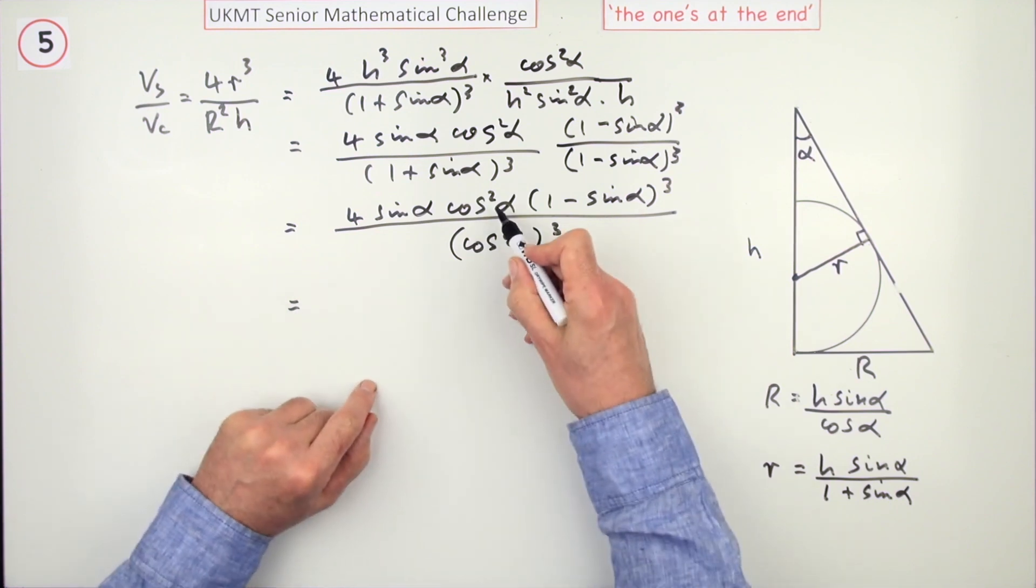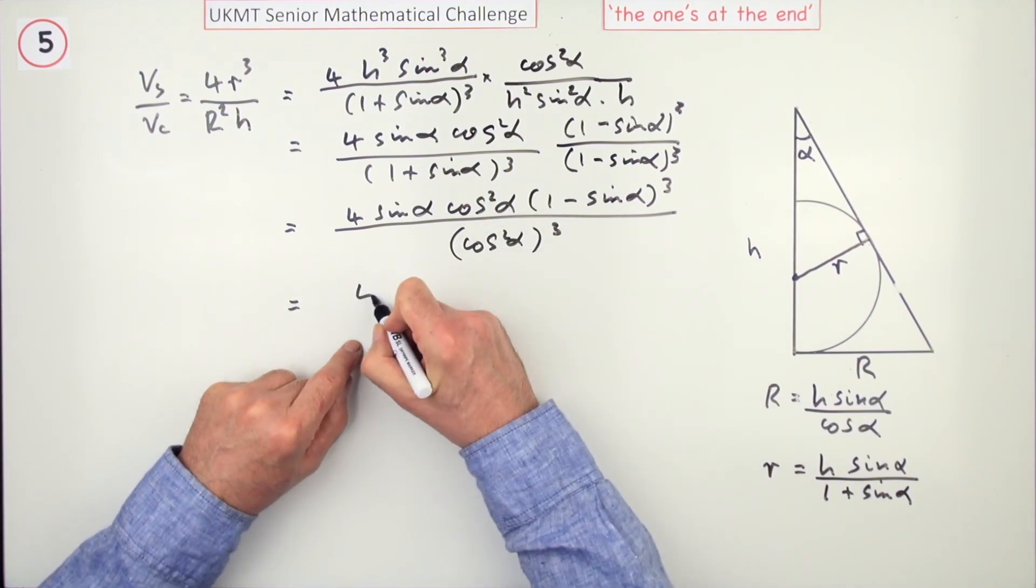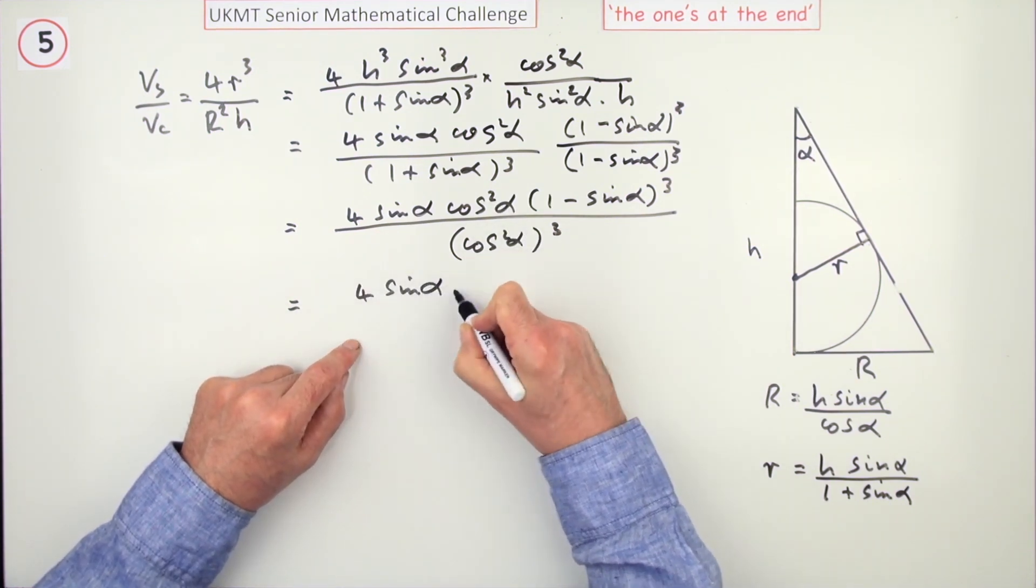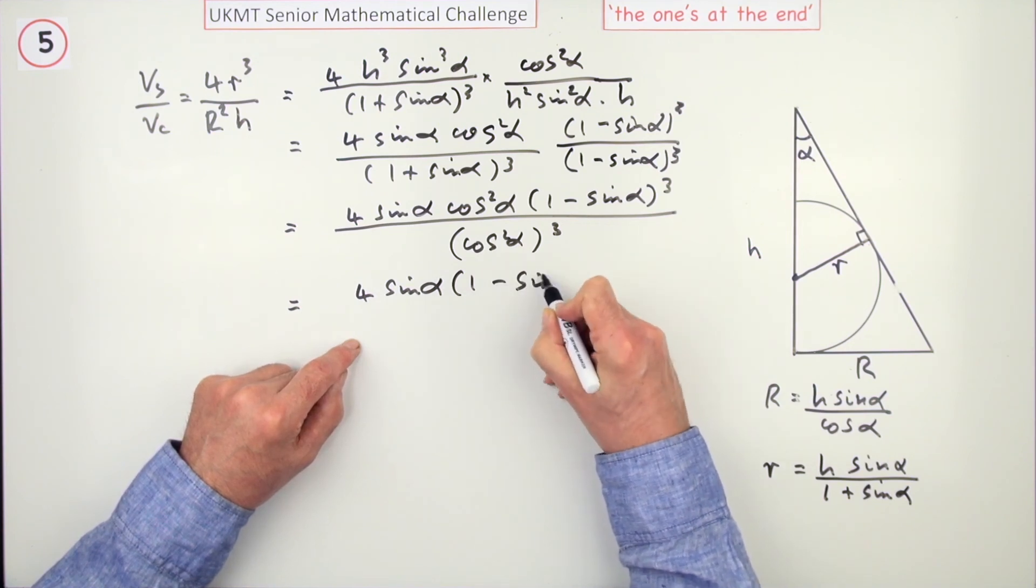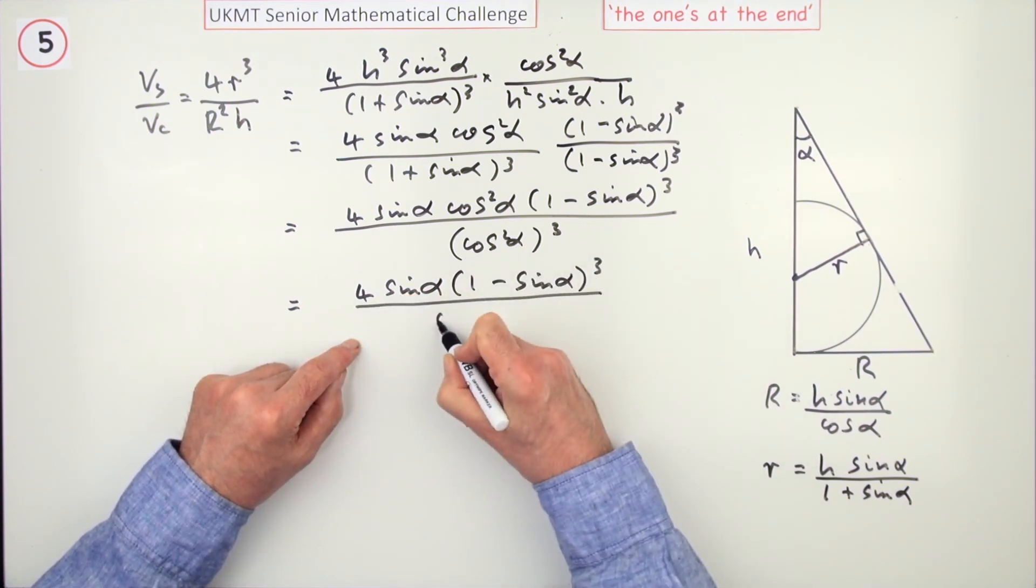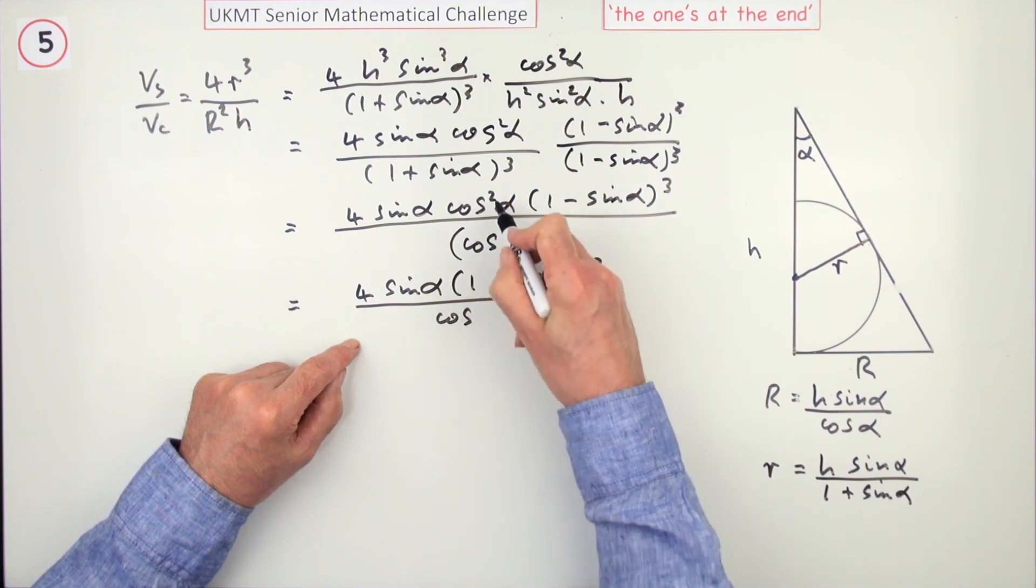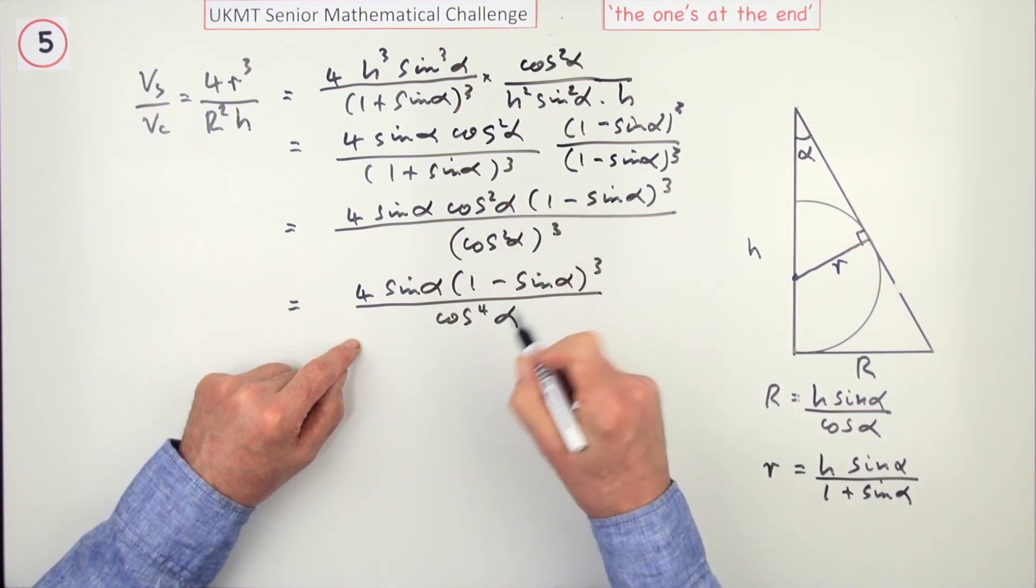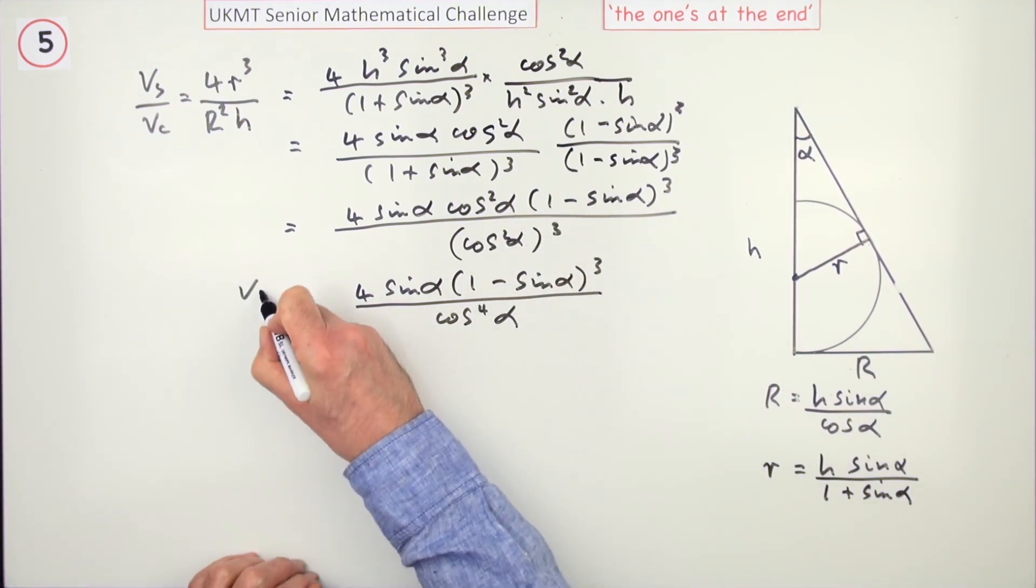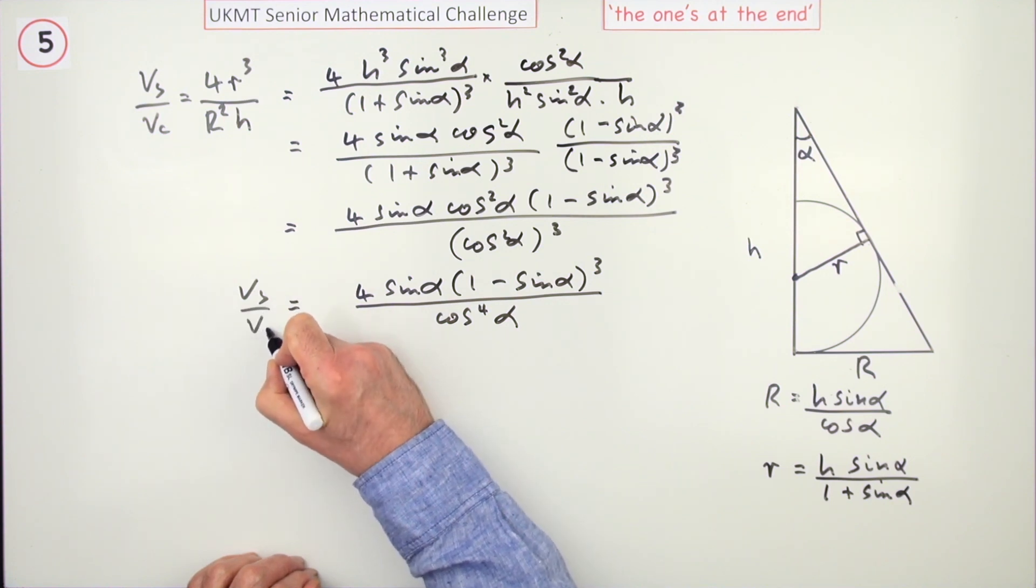And then power two and power six means I'm left with 4 sin α times (1 minus sin α)³ over cos to the power four α, for the ratio of the volume of the sphere to the volume of the cone.